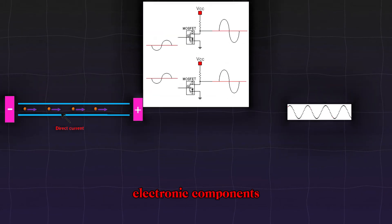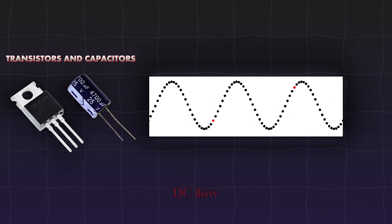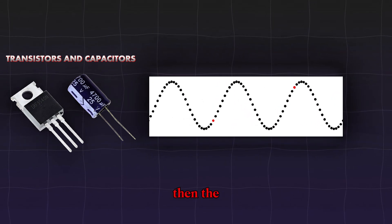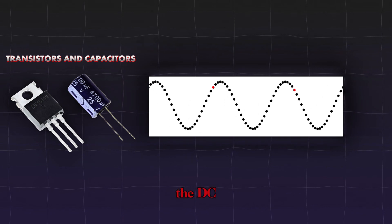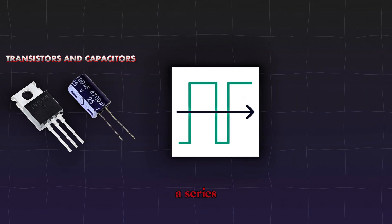Inverters use electronic components like transistors and capacitors to convert the steady DC flow into a simulated AC waveform. Then the inverter circuitry rapidly switches the DC input on and off at a high frequency, which results in creating a series of pulses.